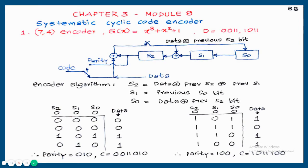First, decide how many parity bits you want to generate. For a 7,4 code, the number of parity bits is 3. So you make 3 blocks: S2, S1, S0. In general it will be S0, S1, S2 to S(n-k-1), giving a total of n minus k blocks.